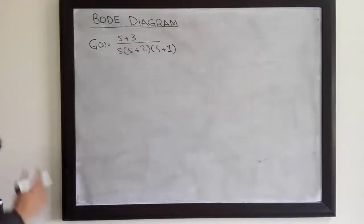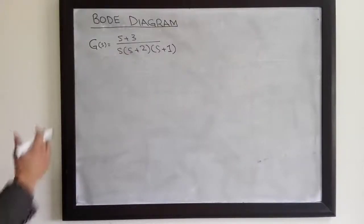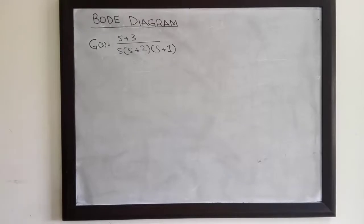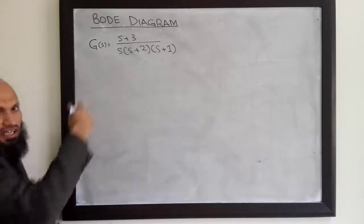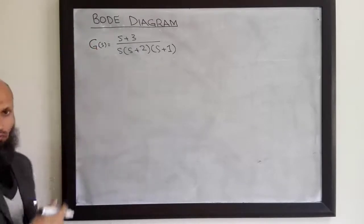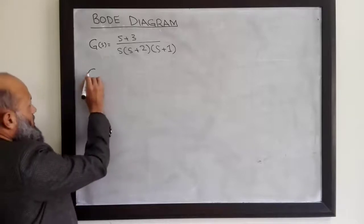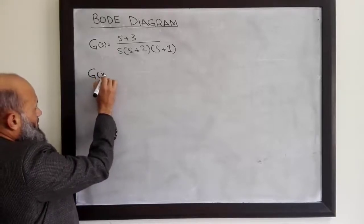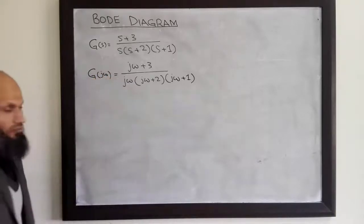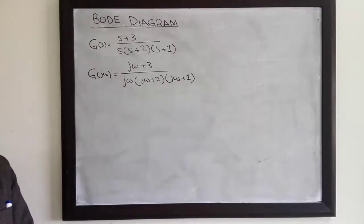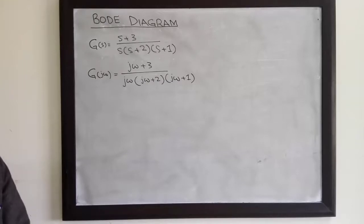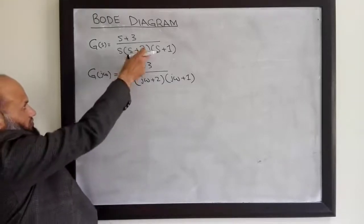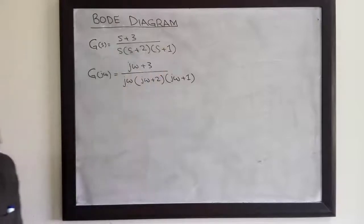Now let's plot the Bode diagram for this transfer function. If we substitute s equal to j omega to obtain the frequency response, we have H of j omega. We have already learned how to sketch Bode diagrams for simple first-order factors and quadratic factors. Here, in this transfer function, we have multiple first-order factors.